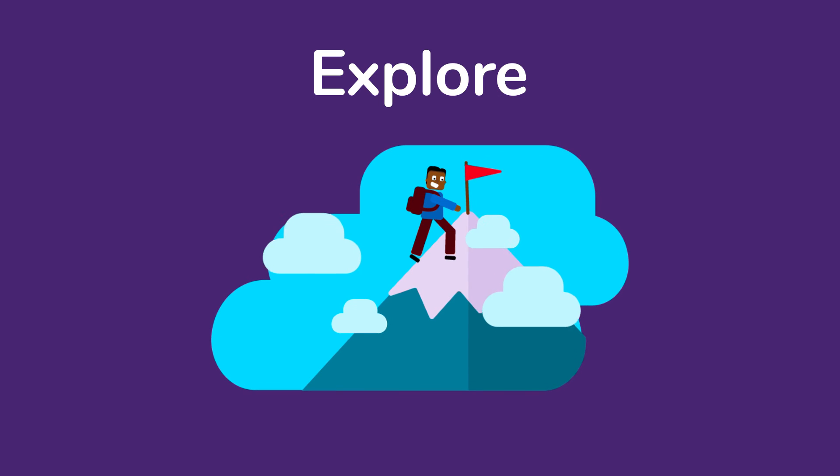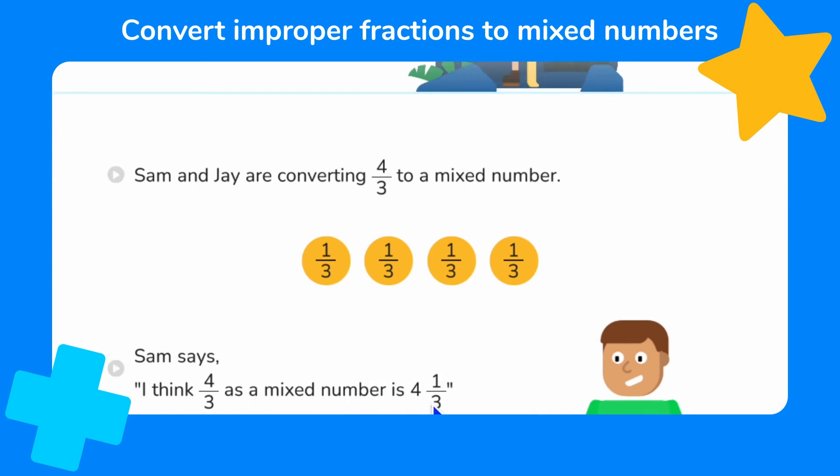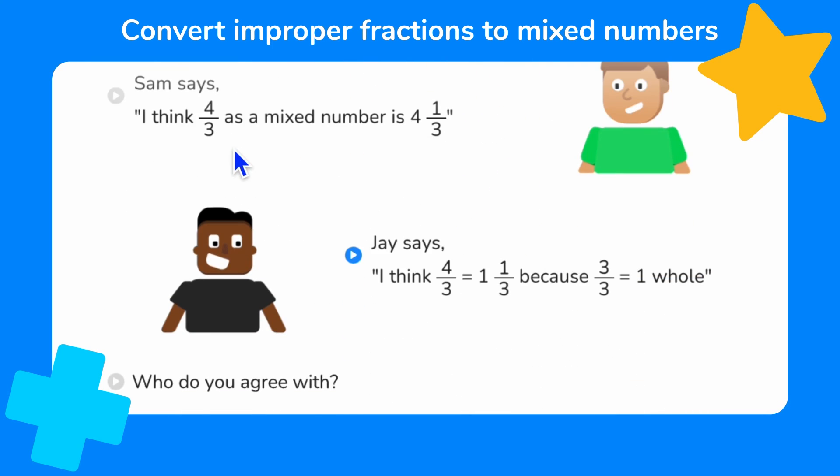Now let's explore this a bit more with another challenge. Now Sam and Jay are converting 4 thirds to a mixed number. We've got a model here to help us. Here's our 4 thirds. Now Sam says I think 4 thirds as a mixed number is 4 and 1 third. Jay says I think 4 thirds is equal to 1 and 1 third because 3 thirds is equal to 1 whole. So we need to work out who is correct. You might want to pause the video here and have a think about what they both said.